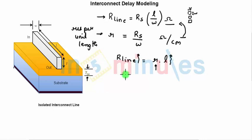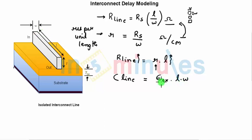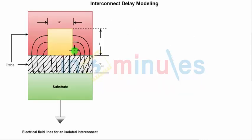Let's do a similar analysis for C_line. C_line is the line capacitance, which can be estimated using the simple parallel plate formula: permittivity of the oxide times area (L into W) divided by the oxide thickness TOX. The unit is Farads. This is the self-capacitance of the line as a first-order approximation. In reality, there will also be fringing capacitance from the sidewalls of the interconnect.